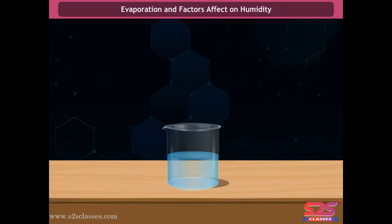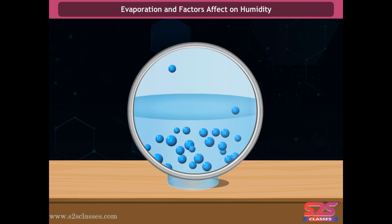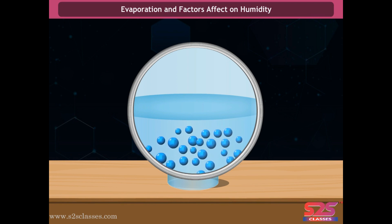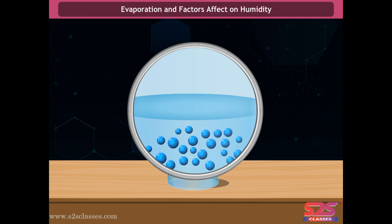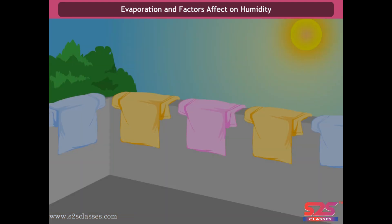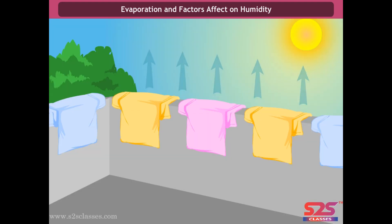Evaporation and factors affecting evaporation: in liquids, different particles have different amounts of kinetic energy at a given temperature. A small fraction of particles on the surface with higher energy break away from the force of attraction and get converted into vapors. Thus evaporation is a physical process in which a liquid changes into its gaseous state below its boiling point — for example, wet clothes can dry on a sunny day due to the evaporation of water.